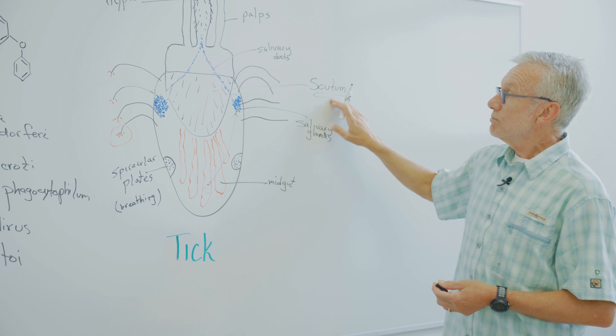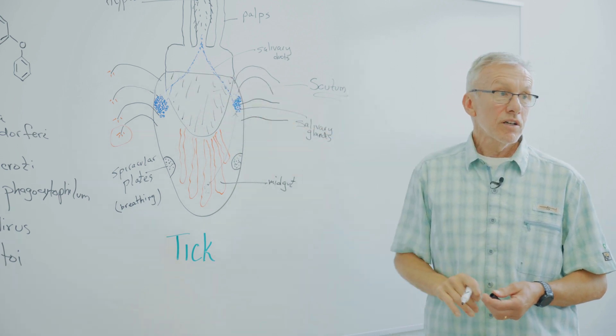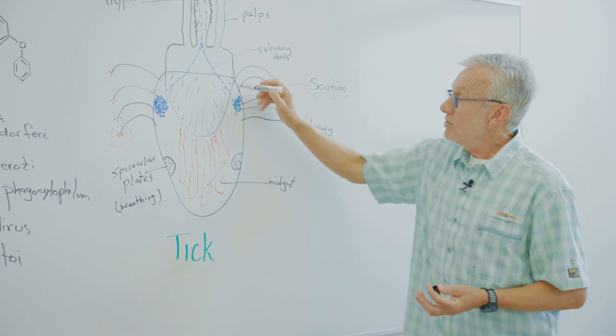We have this thing called the scutum, which helps you identify ticks because the scutums are unique, and they never change. They never change their size.